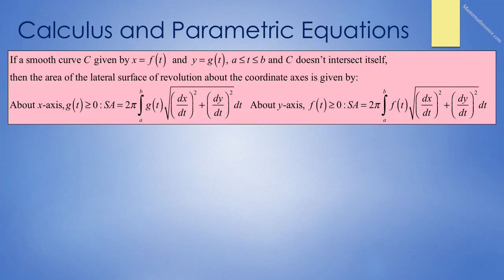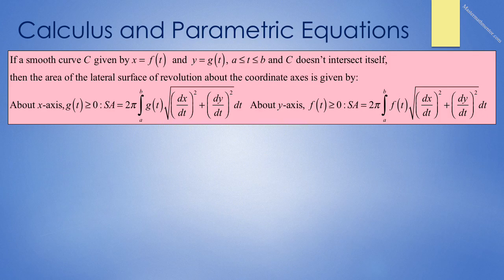Finally, a topic not covered on the AP exam: if a smooth curve C given by parametric equations x equals f(t) and y equals g(t) does not intersect itself, the area of the lateral surface of revolution about the x-axis (where g(t) is greater than or equal to zero) is S_A equals 2pi times the integral from a to b of g(t) times sqrt((dx/dt)² plus (dy/dt)²) dt.